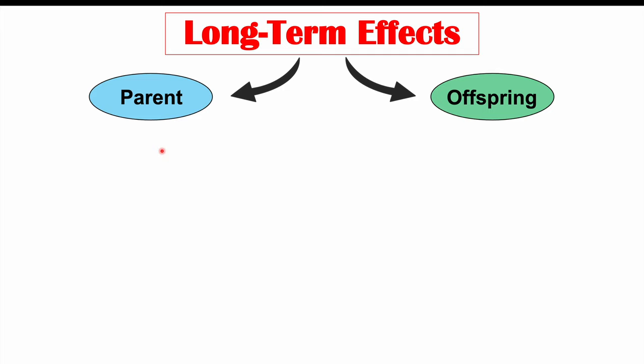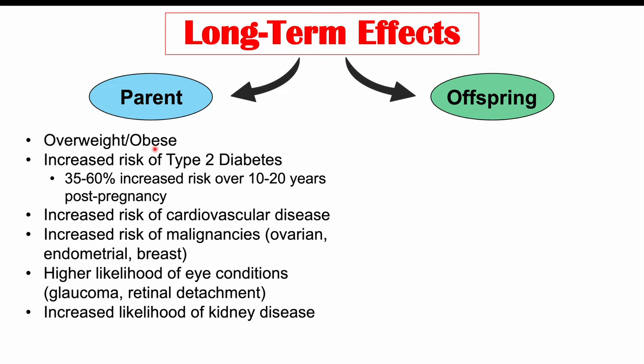Regarding long-term effects in the pregnant parent: most patients have resolution of gestational diabetes after delivery due to removal of human placental lactogen, but some may have persistent glucose intolerance requiring post-delivery screening. Even after resolution, they're at increased risk for obesity, and a 35 to 60 percent increased risk of developing type 2 diabetes over 10 to 20 years post-pregnancy, due to their underlying susceptibility to insulin resistance.